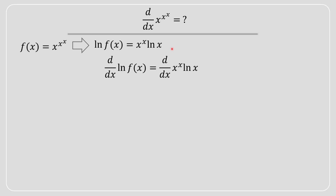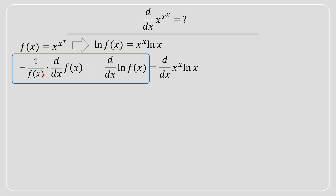We take the derivative of both the left-hand side and the right-hand side. Starting on the left: the derivative of ln(f(x)) — keep in mind f(x) represents x to the power of x to the power of x, so it has an x term in it. The derivative of ln of something is one over that something multiplied by the derivative of what's inside, so we get one over f(x) times f'(x).